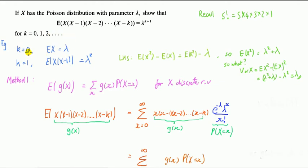Let's look at a couple of examples. When k is 0, this expression says that the mean of x is lambda. In case k=1, it says that the expression E[x(x-1)] is lambda squared. I've added some notes in green here — if you want to read what this expression is actually saying.